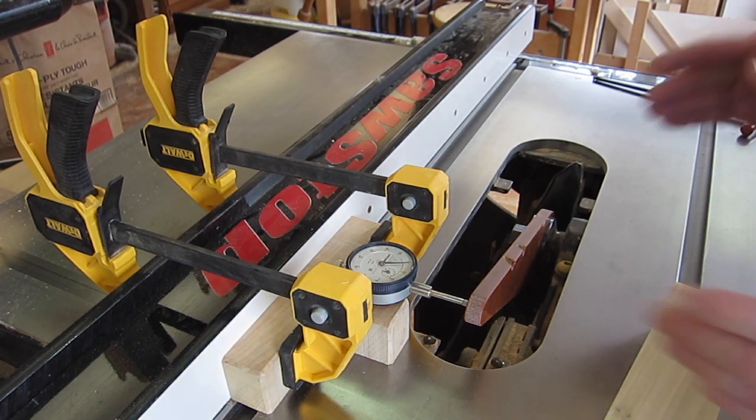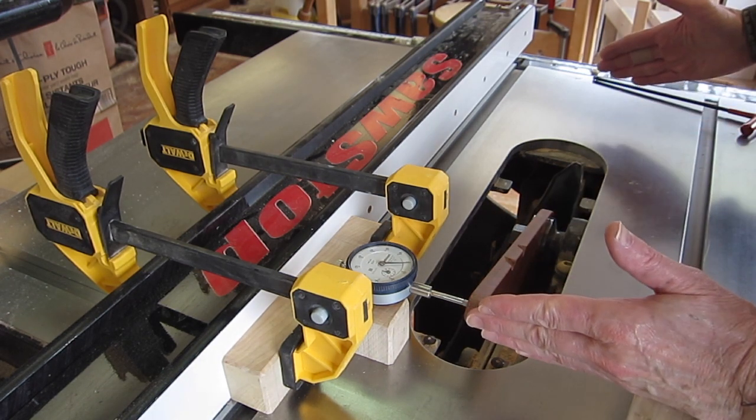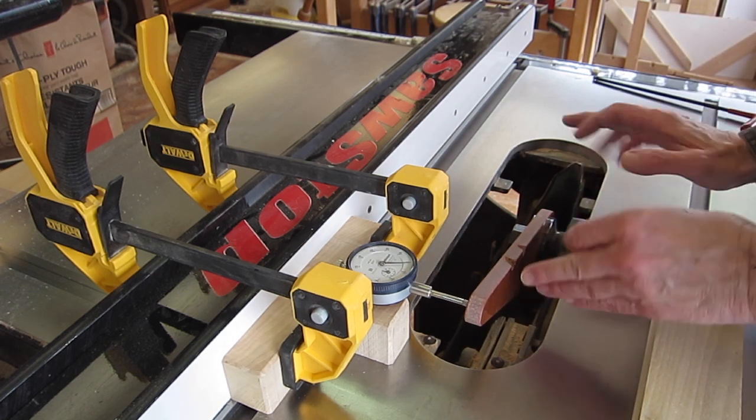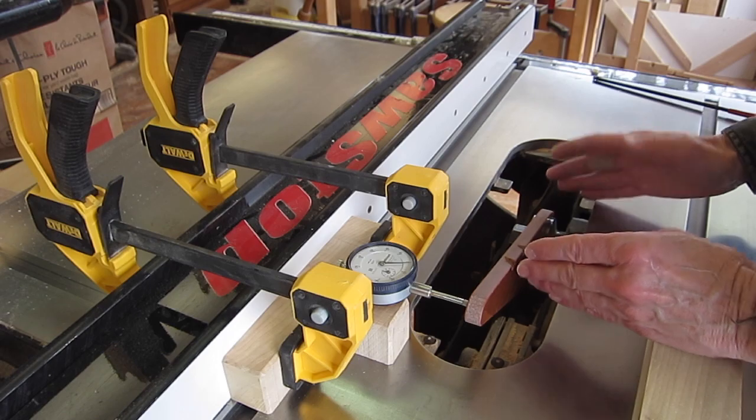And there I've got one and a half thou. So also, thing to remember is, that's over a span of 18 inches. Over a span of 9 inches, which is about the maximum amount of the blade that can stick above the table, it would be half of that.